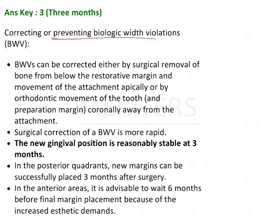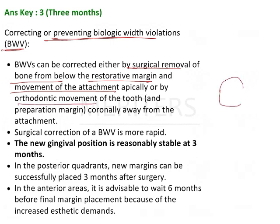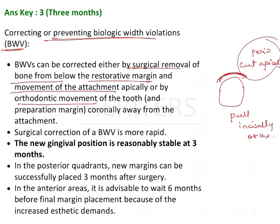Correcting or preventing biologic width violations (BWV) can be done by surgical removal of bone from the restorative margin, by apical movement of the attachment, or by orthodontic movement. So you can either cut apically — where perio comes into play — or pull it out incisally — where ortho comes into play. In the current question we are talking about crown lengthening. The new gingival position is reasonably stable by three months in posterior quadrants, after which you can go ahead with placing the margins and finishing the final restoration. In the anterior area, six months is advisable for aesthetic demands.